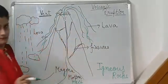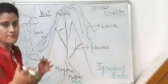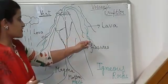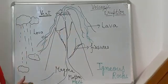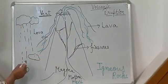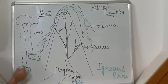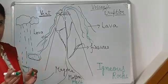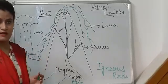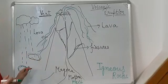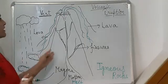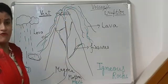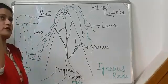When the lava comes outside into the atmosphere and gets in contact with the air, it cools down and starts solidifying, forming a rock-like structure. It accumulates in one place, cools down with the air blowing, and becomes igneous rock. Sometimes rainfall also occurs during volcanic eruption because the heat causes evaporation, which forms clouds in the sky.